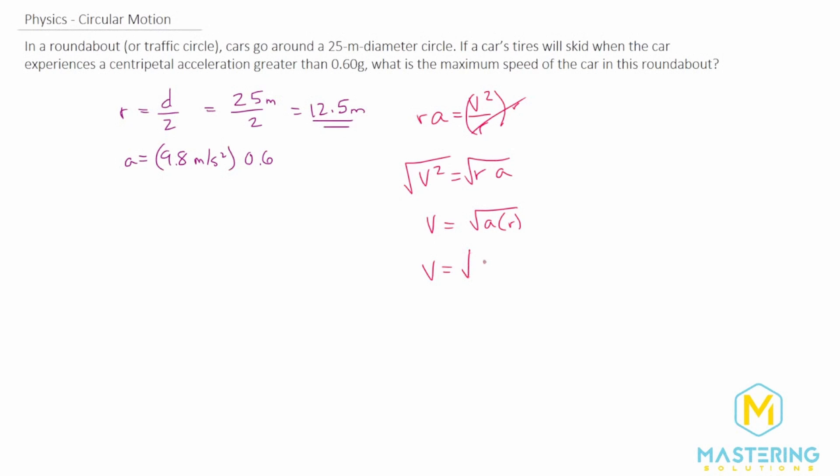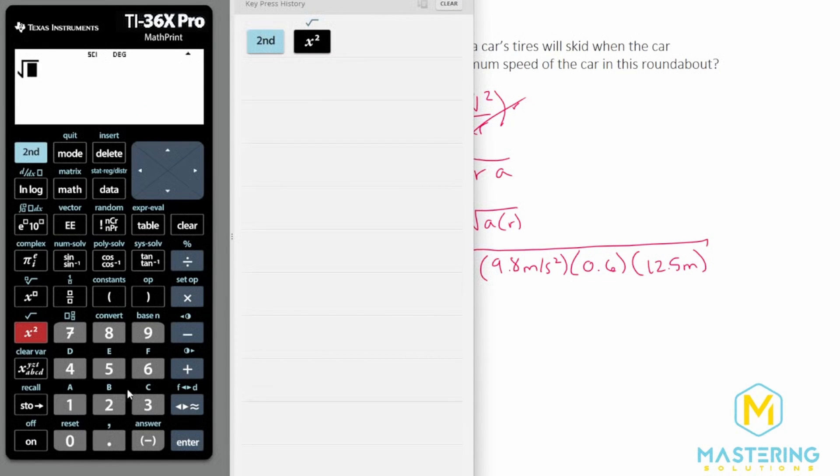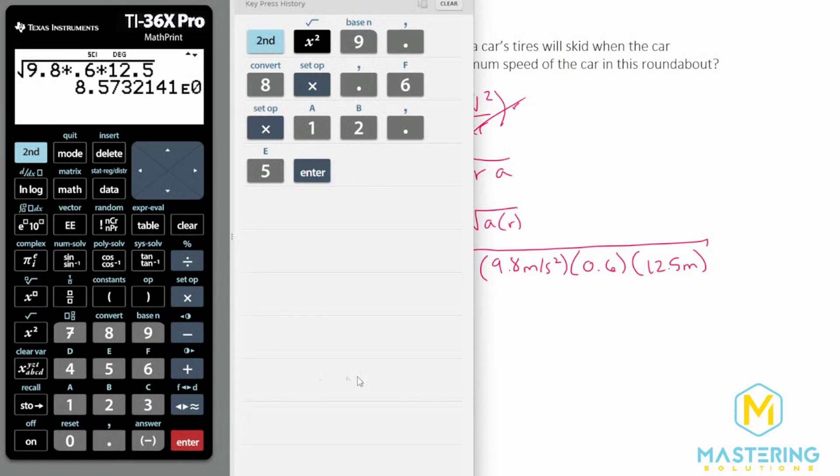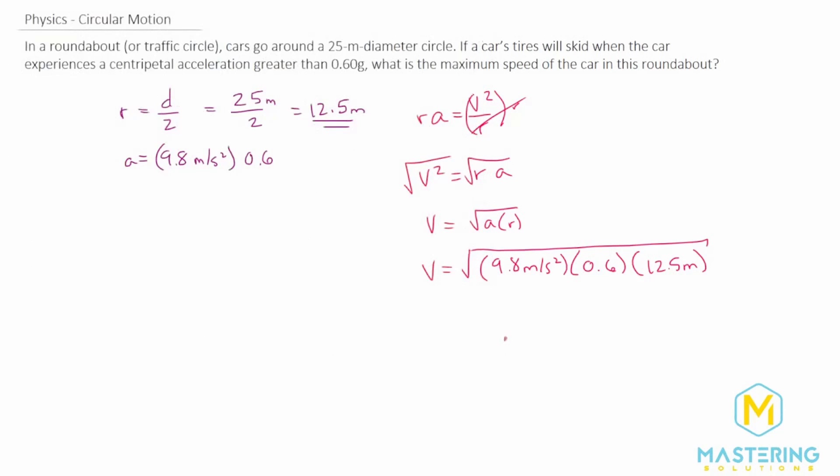So when we plug in our numbers, the acceleration is going to be 9.8 meters per second squared times 0.6 times the radius of 12.5 meters, and then we'll take the square root of all that. So we have the square root of 9.8 times 0.6 times 12.5, which gives us a maximum speed of 8.57 meters per second.